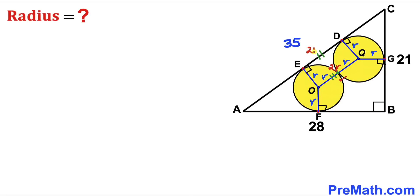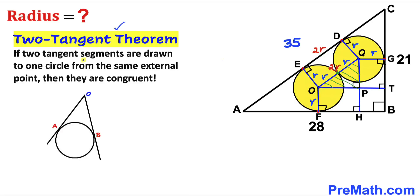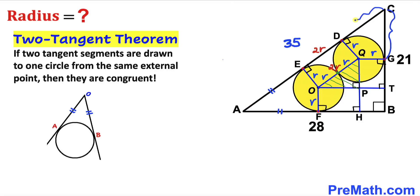Dropping perpendiculars OT and QH, these intersect at point P, forming right triangle OPQ. Recalling the two-tangent theorem: if two tangent segments are drawn to one circle from the same external point, they are congruent. So segment OF is congruent to segment AE, and segment CG is congruent to segment CD.